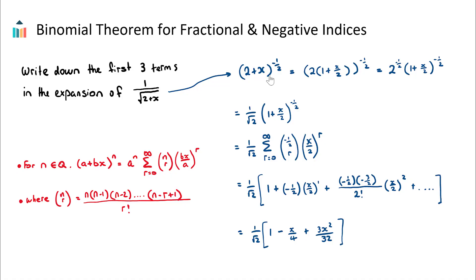Let's go back to our question. We have two plus x to the power of negative a half. I'm going to factor out the two, because I want this to be a one. We get two at the front of one plus x over two, all to the power of negative a half. Using our index laws, this is two to the power of negative a half multiplied by one plus x over two to the power of negative a half. Two to the power of negative a half is just one over root two, so we've simplified it and we've made the inner bracket start with a one.